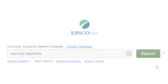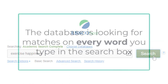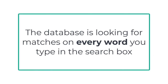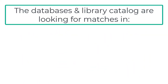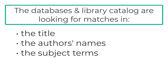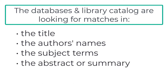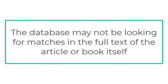When you click the search button in a database or the library catalog, it looks for fairly exact matches on every word that you type into that search box. If it doesn't find a match on every word, then it won't put an article or book in your search results. So make your keywords count. The databases and library catalog are looking for matches in places such as the title, the author's names, subject terms, and in the abstract or summary of the item. Keep in mind that the database or catalog may not be looking for matches in the full text of the article or book itself.